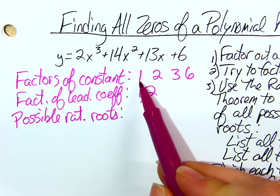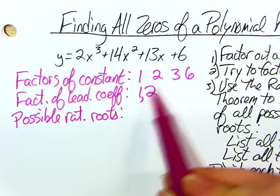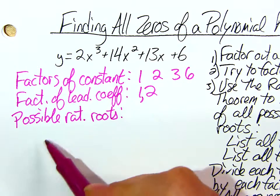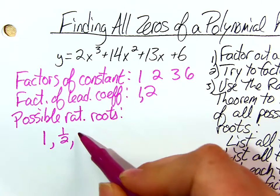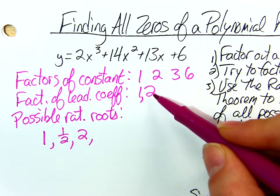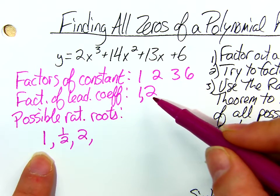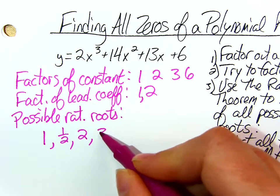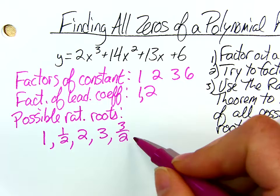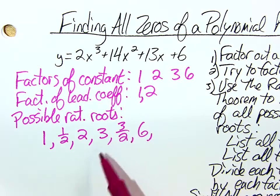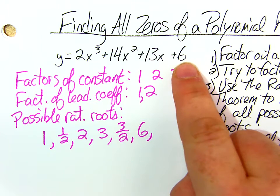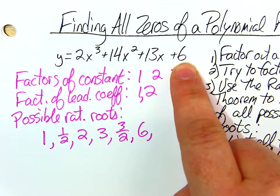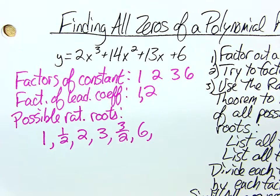Now to find the list of possible rational zeros, all I have to do is take each one of these numbers and divide it by each one of these numbers. So we put them in a big list called the possible rational roots. We abbreviate rational as rat usually, but we don't mean the rodent. We just mean rational. Possible rational roots. So I'm going to take 1 and divide it by 1 and 2. I'm going to take 2 and divide it by 1 and 2. And just repeat the process for all of them.